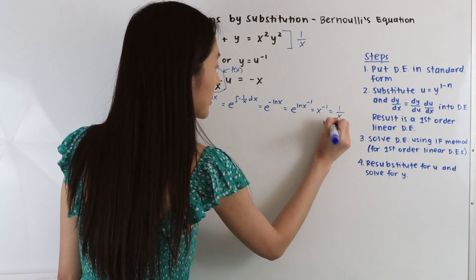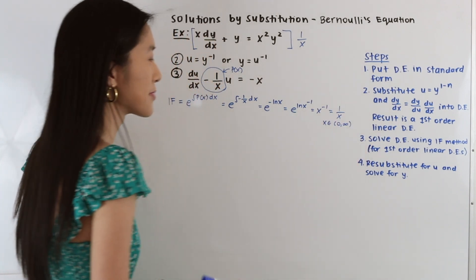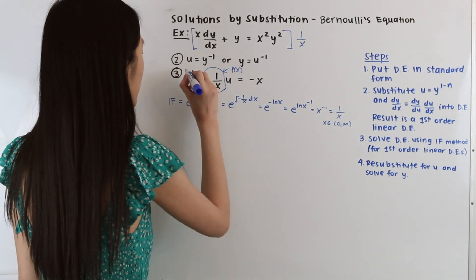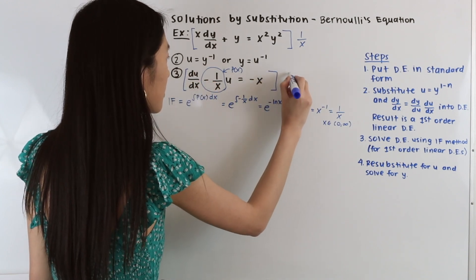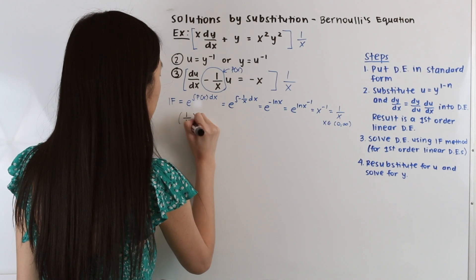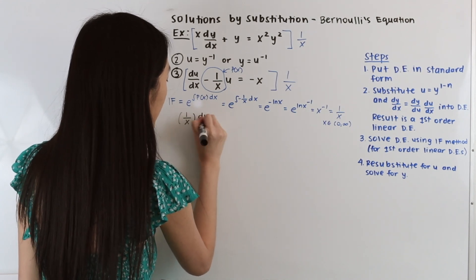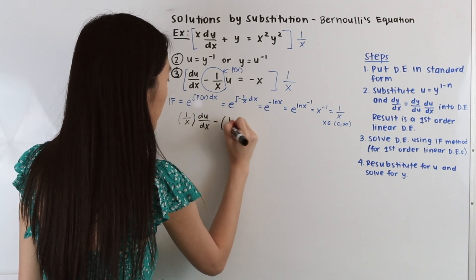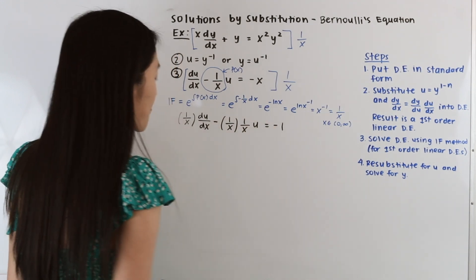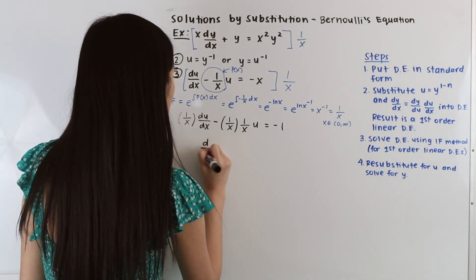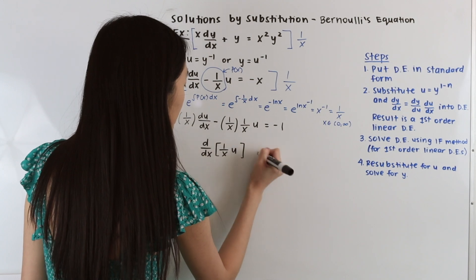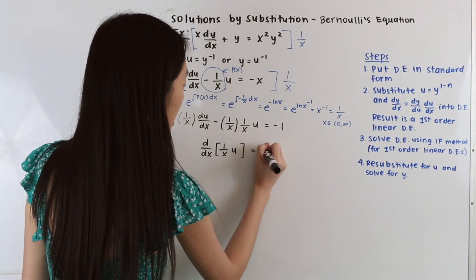We define x on the interval from 0 to infinity so we don't have to worry about the absolute value. Multiplying the entire differential equation by the integrating factor 1/x, we get (1/x)(du/dx) − (1/x²)u = −1. The left hand side equals d/dx[(1/x)·u] by the product rule, and the right hand side is −1.